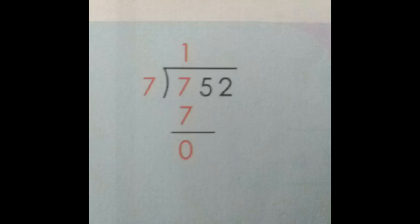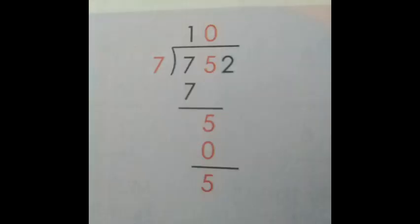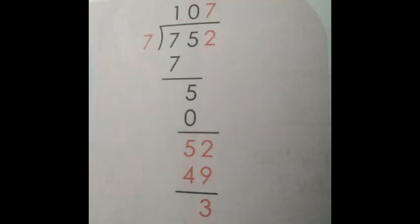How many times we will get 7? One time. Now 7 and 7, 7 minus 7 is 0. In the dividend 752, after 7, 5 is there, so bring down 5.